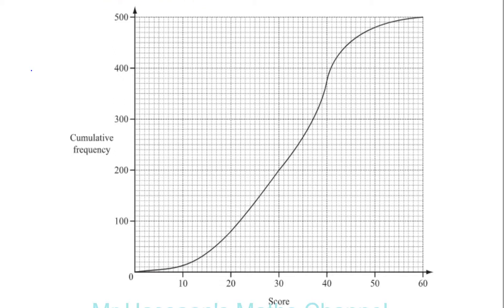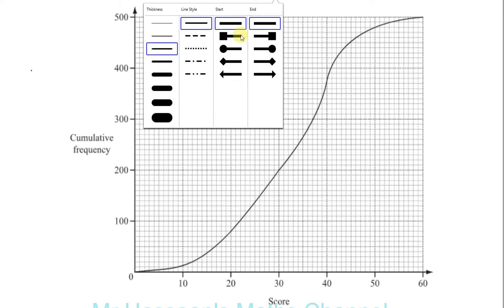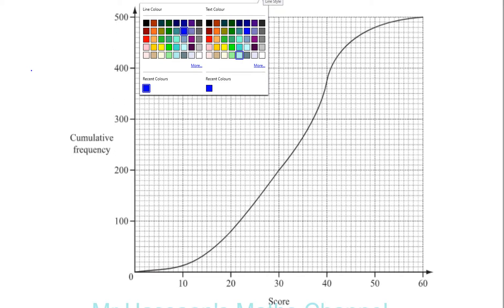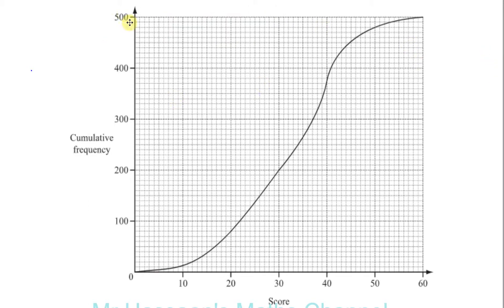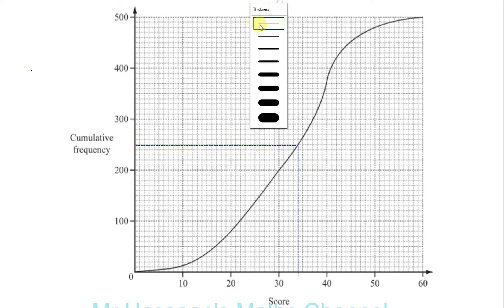I'm going to draw a line to show you exactly. There are 500 people, so right in the middle of 500 is 250. I make a line from 250 all the way along until it hits the curve, and then from that point straight down. You get the median score, which is the middle score when arranged in order of size. That score is 34, so the median score is 34.